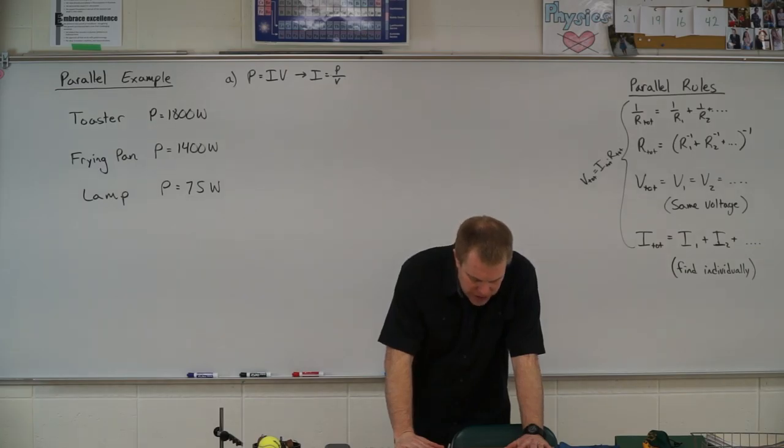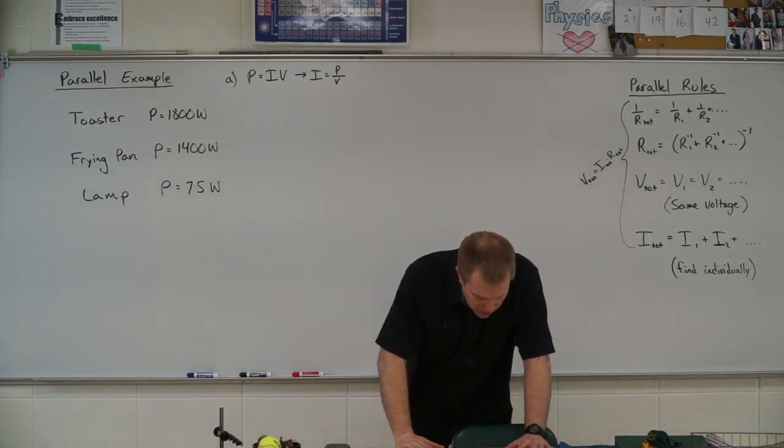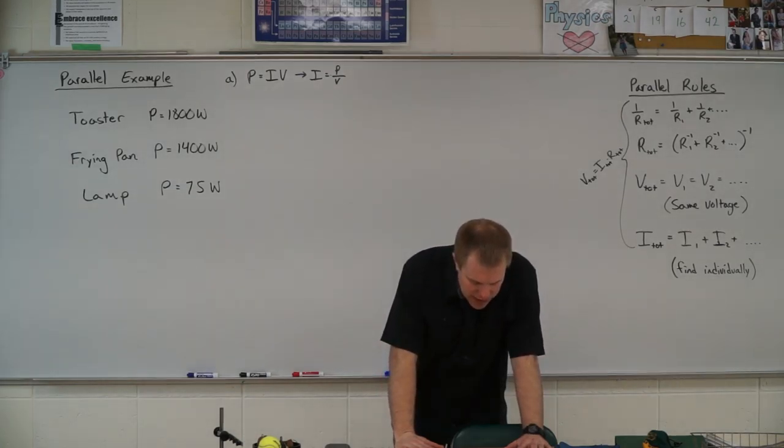an 1800 watt toaster, a 1400 watt electric frying pan, and a 75 watt lamp are plugged into the same electrical outlet in a 20 amp, 120 volt circuit.